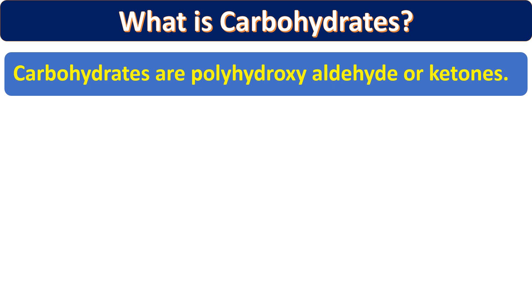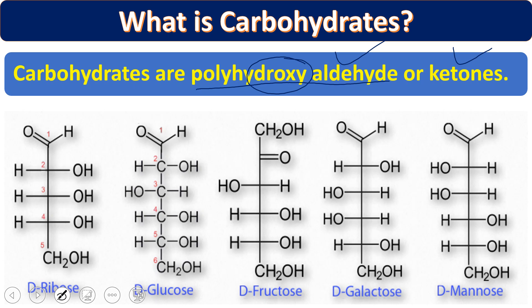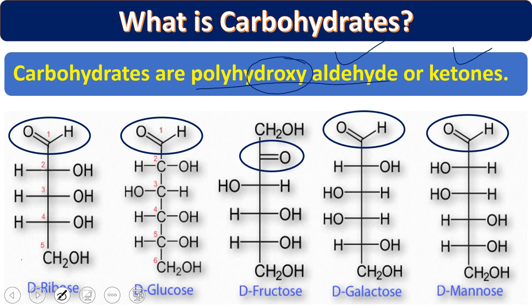First we should understand what carbohydrates are. Carbohydrates are basically known as polyhydroxy aldehydes and ketones — they will have multiple OH groups along with either an aldehyde or a ketone group. Looking at different carbohydrates: pentose sugars, glucose, fructose, galactose, and mannose — you can see aldehyde groups or ketone groups along with multiple OH groups.